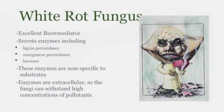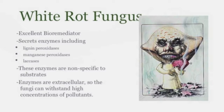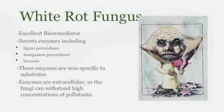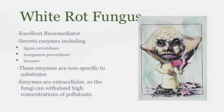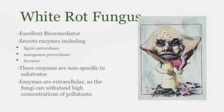White-rot fungus is an excellent bioremediator. Its secret enzymes include lignin peroxidases, manganese peroxidases, and laccases. These enzymes are nonspecific to substrates, and because they are extracellular, the fungi can withstand high concentrations of pollutants. White and brown-rot fungi are two groups commonly used in mycoremediation. White-rot fungus has been shown to be the most effective fungus at removing toxins containing hydrocarbon bonds, as its nonspecific enzymes can degrade a wide variety of toxic substances with structures similar to lignin.